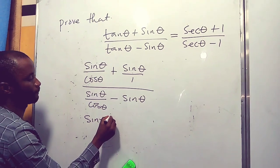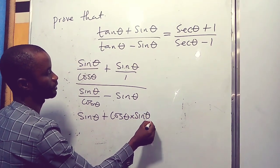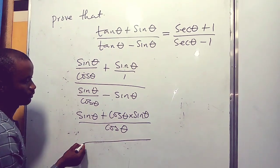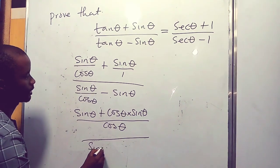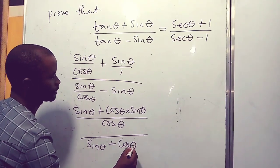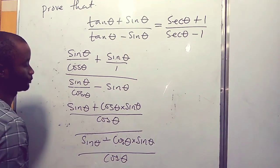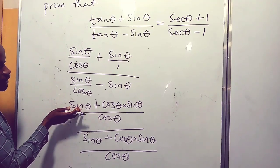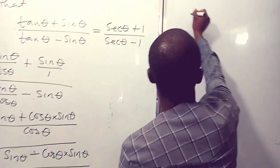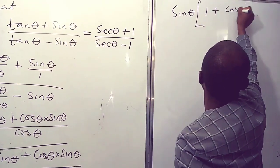From here, let's find the LCM. The LCM is cos theta. So the numerator becomes sine theta plus cos theta times sine theta, all over cos theta. Now let's find the common factor — the common factor here is sine theta: sine theta times open bracket one plus cos theta, all over cos theta.